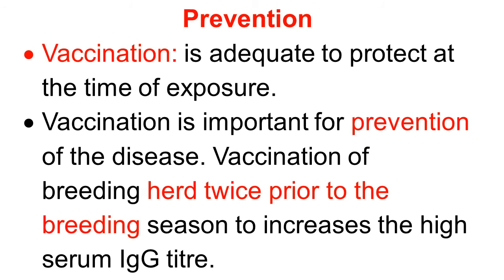Regarding the prevention aspect: vaccination is adequate to protect animals at the time of export. Vaccination is very important for prevention of the disease. The vaccination of the herd is done twice prior to the breeding season to increase the serum IgG antibody titer. Vaccination of the breeding herd is very important for prevention of the disease.